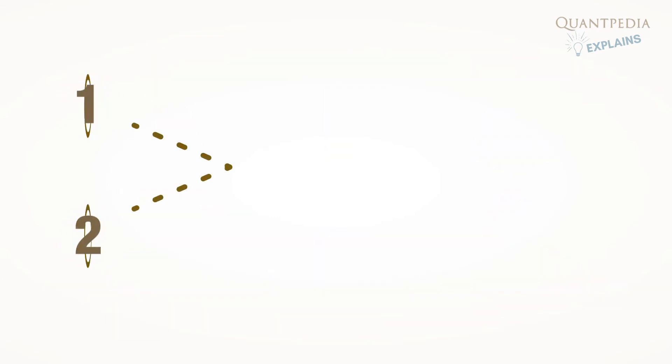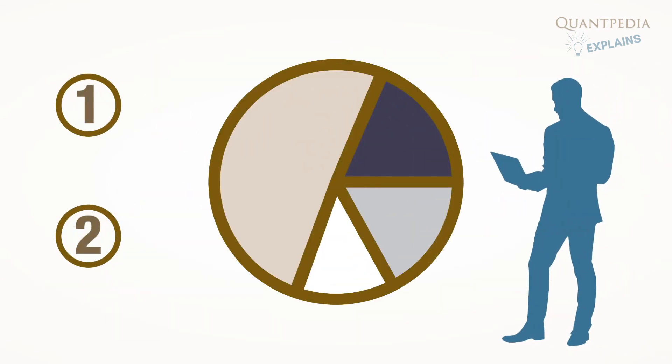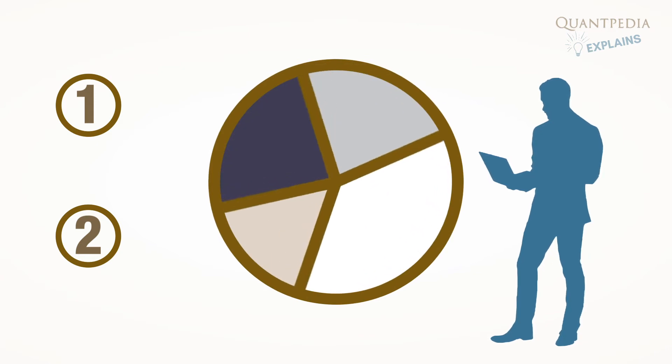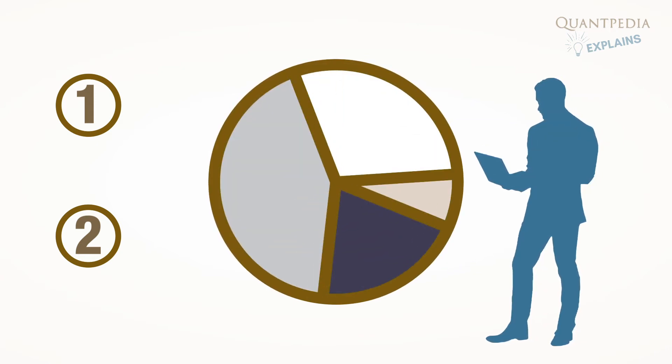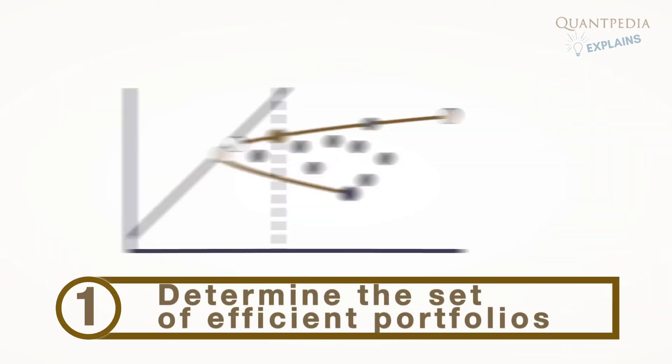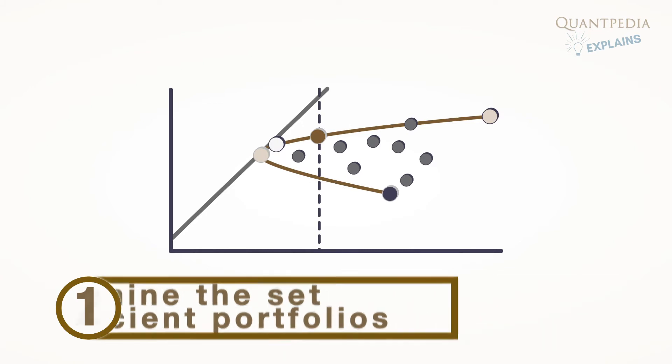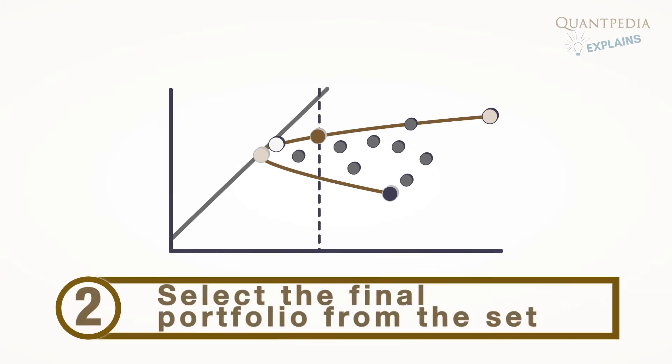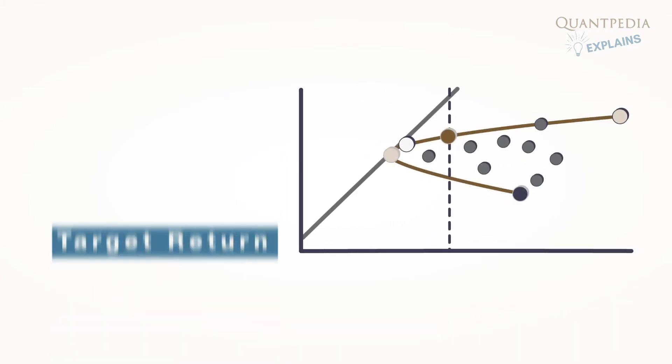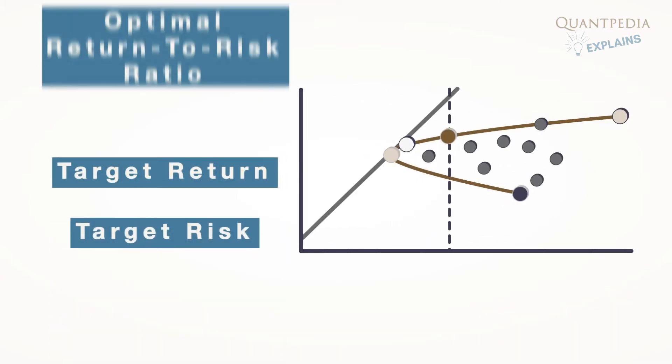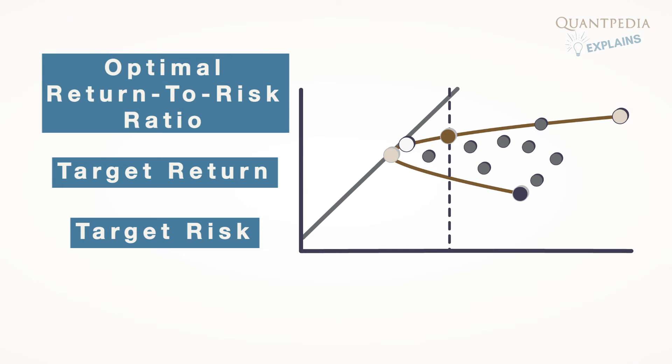Two steps have to be conducted when an investor searches for the best portfolio in terms of return-to-risk among various possible portfolios. First, determine the set of efficient portfolios. After that, select the specific final portfolio from the set, given the investor's target return, target risk, or preference toward optimal return-to-risk ratio.